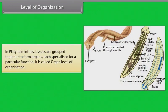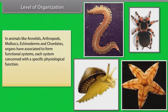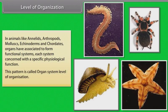In Platyhelminthes, tissues are grouped together to form organs, each specialized for a particular function — this is called organ level of organization. In animals like annelids, arthropods, mollusks, echinoderms and chordates, organs have associated to form functional systems, each concerned with a specific physiological function. This pattern is called organ system level of organization.